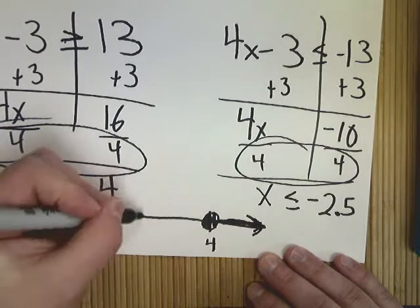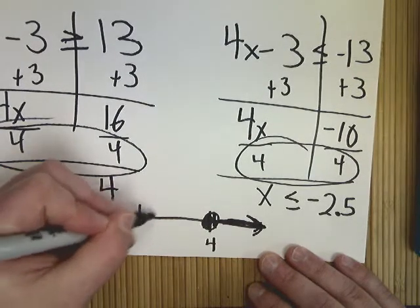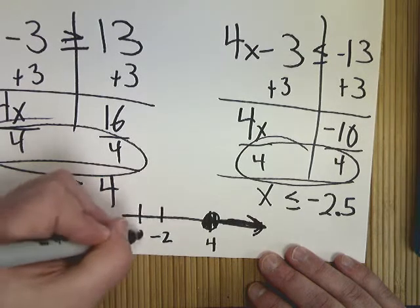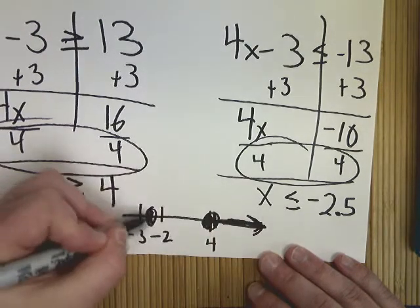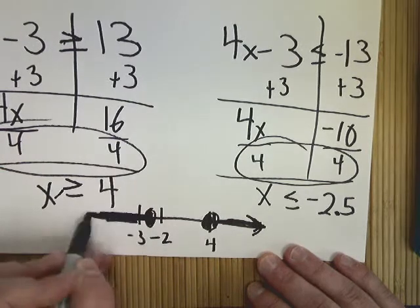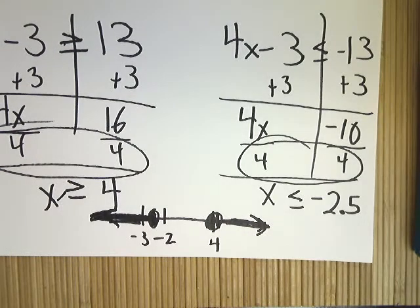In the other case, I'd go down to negative 2.5, which is probably somewhere between negative 2 and negative 3, if you're given a graph. I need to fill it in, because there's a line underneath. And it's less than, so it goes to the left. That's your standard, basic, solving absolute value inequality.